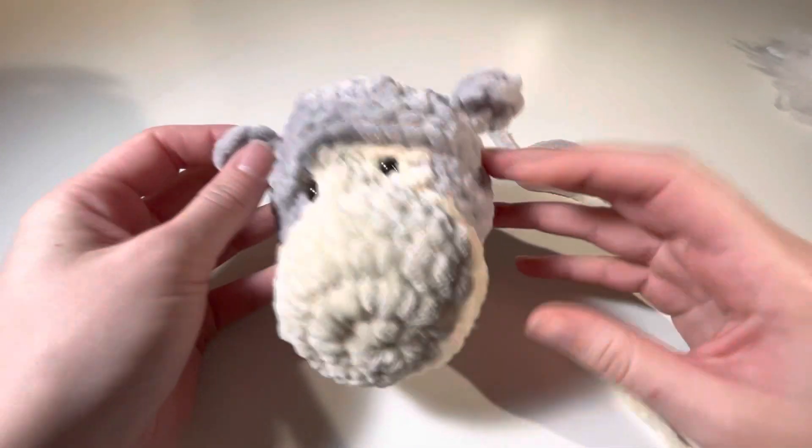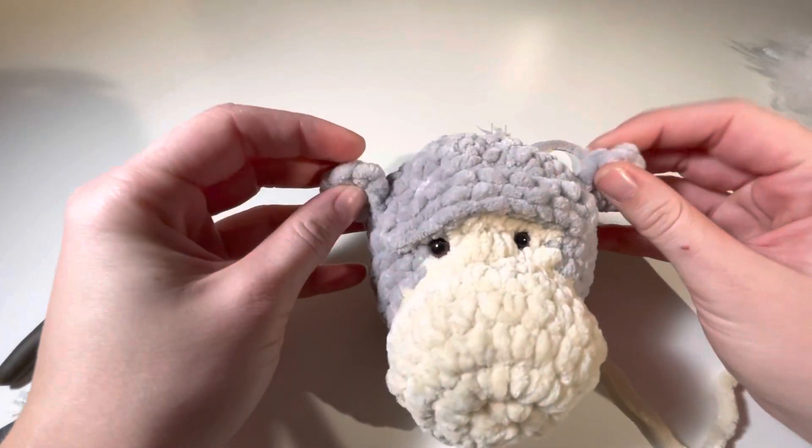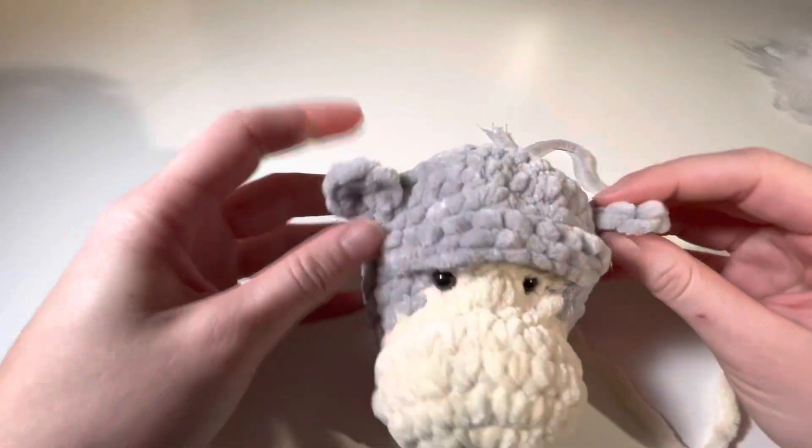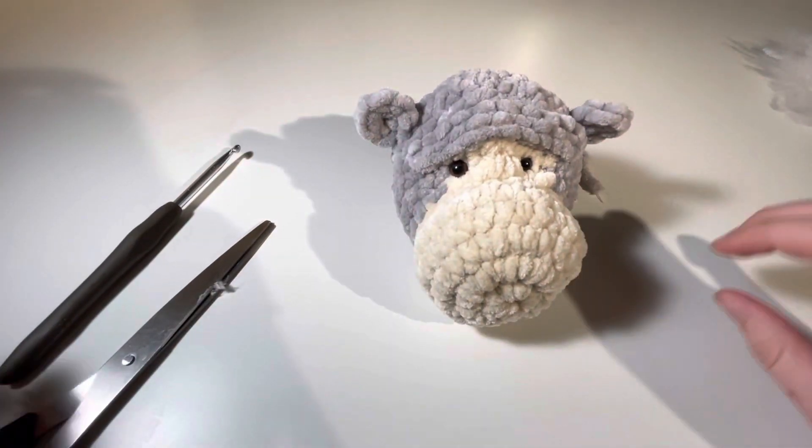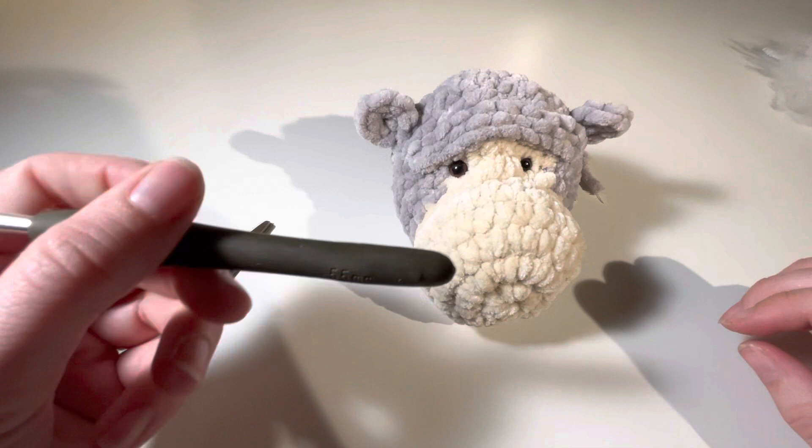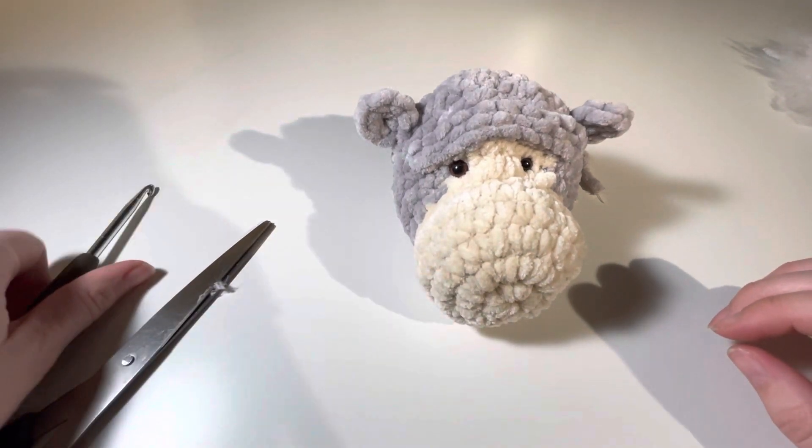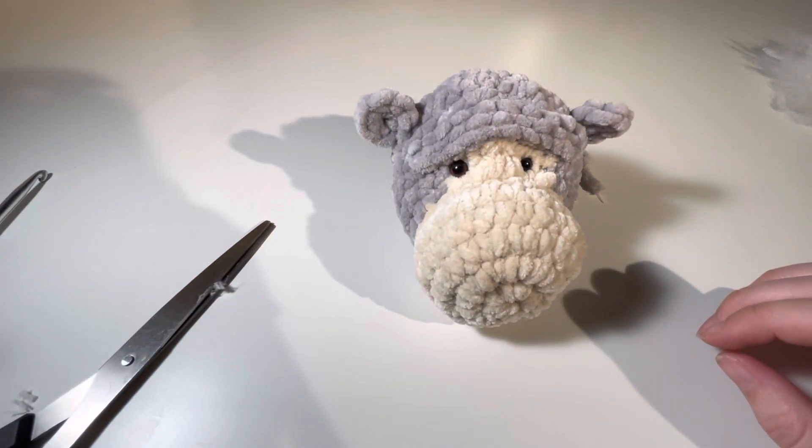Okay, so now your gorilla should have a brow and some eyes. We're going to do the nose. I'm going to use a 5.5 hook and you need three stitch markers, four... no, five. Fine.